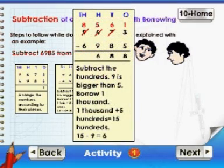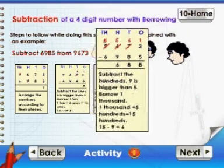Subtract the hundreds. 9 is bigger than 5. Borrow 1,000. 1,000 plus 5 hundreds is equal to 15 hundreds. 15 minus 9 is equal to 6.